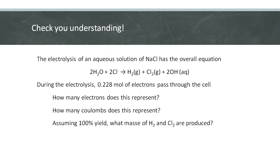Compute for the number of coulombs, and assuming 100% yield, what masses of hydrogen and chlorine are produced.